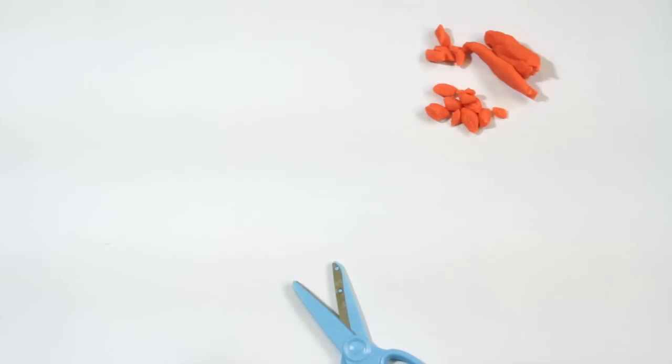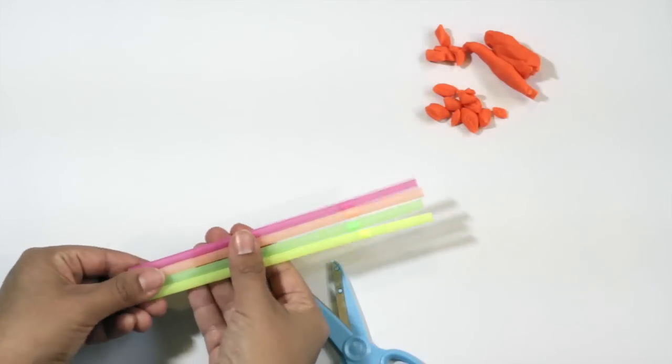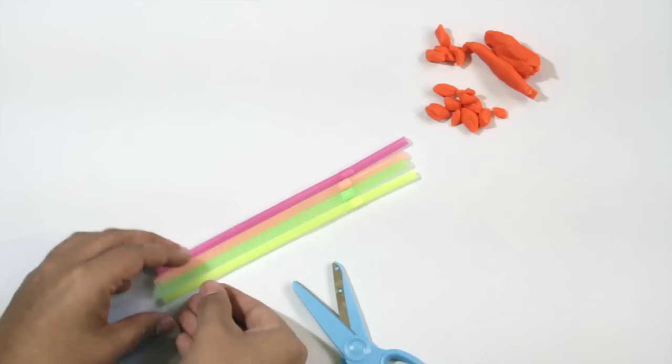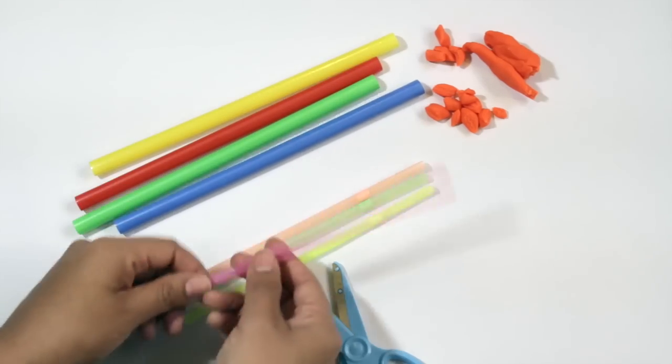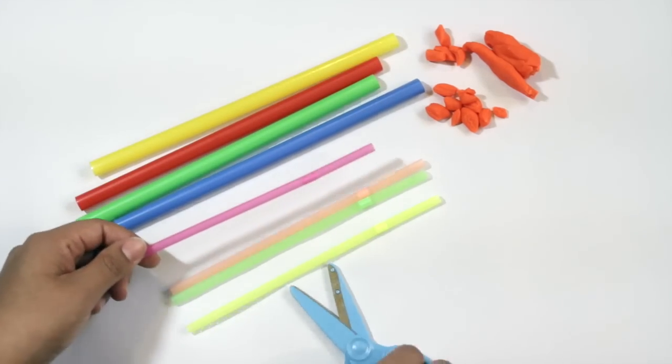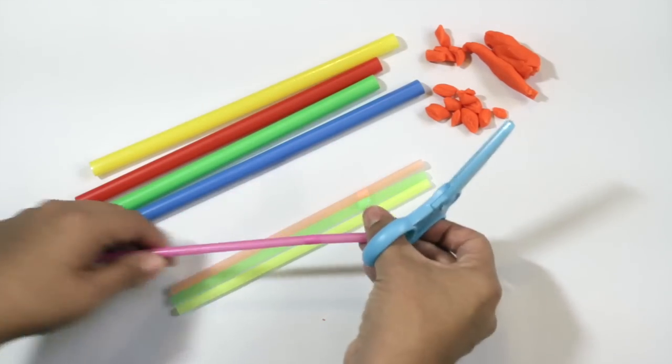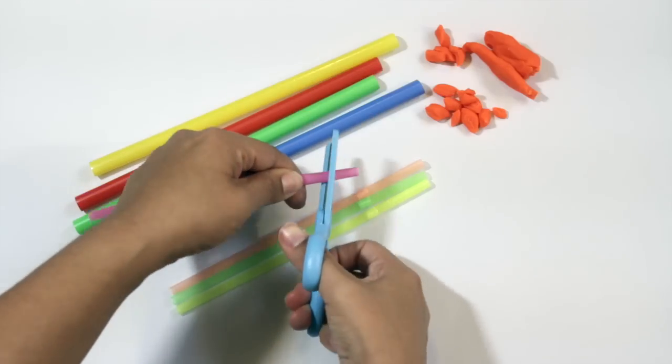Once that skill is mastered try something else like straws. Now these are smaller straws. They also have these bigger kind of milkshake straws that you could use. These are gonna be a little bit easier because they are thinner. Same thing snipping, snipping off the straws.